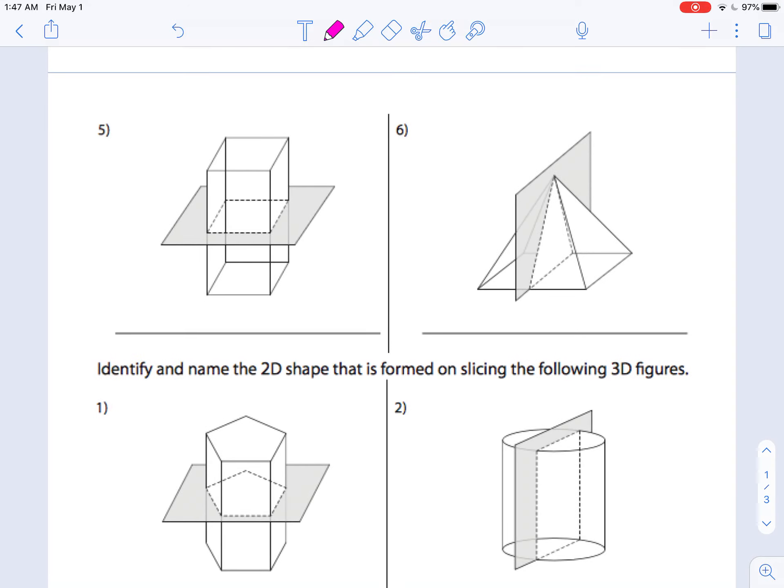We are going to look at some cross sections. So here, what I want you to do is just name the shape. Name the 2D shape. So look at the dotted lines. What kind of shape is being made by these dotted lines? And I am just shading these in to help you out a little bit. So in number 5, I have got a square or a rectangle. It doesn't have any markings on there telling me the sides are all congruent. So I can't assume square. I have to say it is a rectangle. Number 6, it is definitely a triangle.